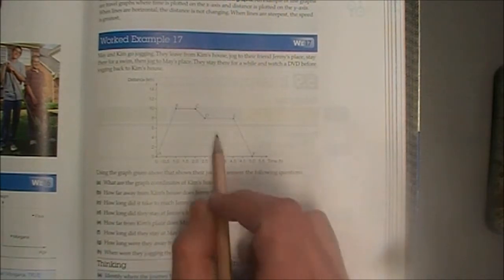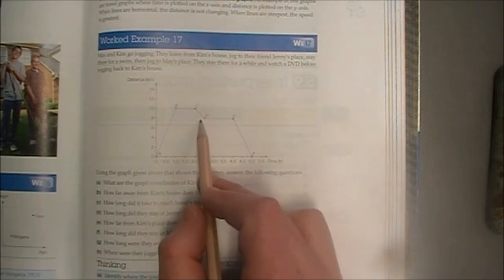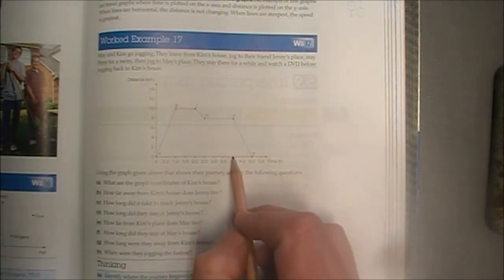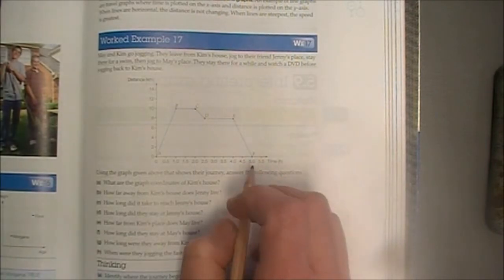How long did they stay at May's house? This was May's house here, where they watched the DVD. We started at 2 and a half hours. We finished at 4 hours. So that's a time length of 1 and a half hours.